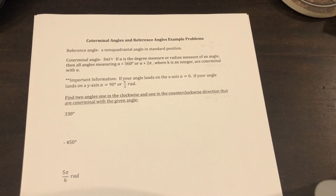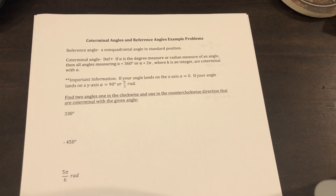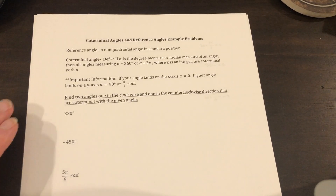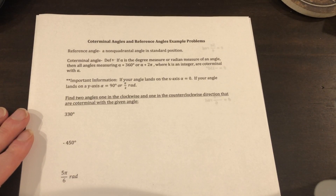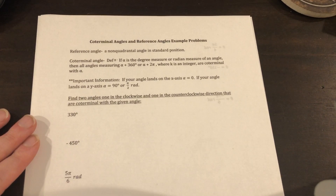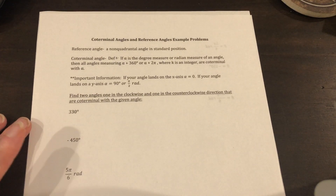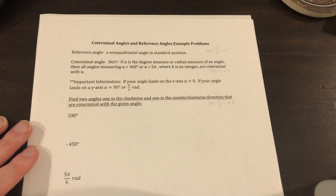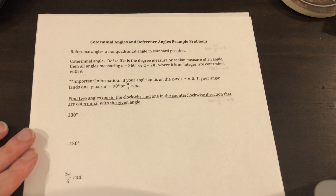In this section we're going to be talking about coterminal angles and reference angles. The definition of reference angle is it's a non-quadrantal angle in standard position — pretty much it's always going to be a quadrant one answer. It's always going to be positive, and it's going to be the closest angular distance to the x-axis that you can get.